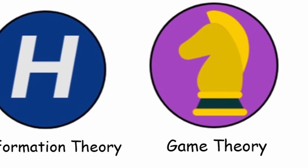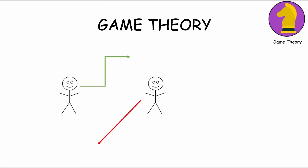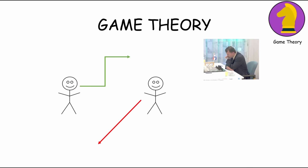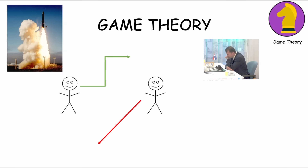Game theory is like a way of thinking about how people make decisions when they interact with each other. It helps us understand strategic thinking and choices in situations where what one person decides can affect what others should do. An example of game theory is the prisoner's dilemma.